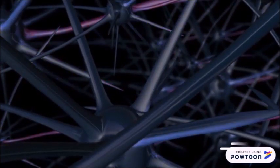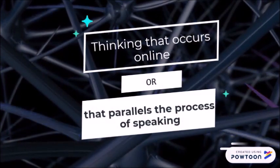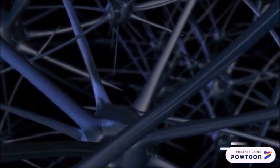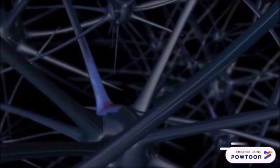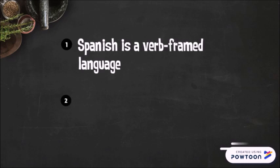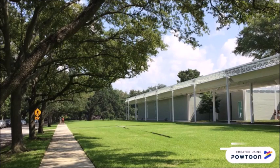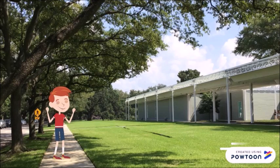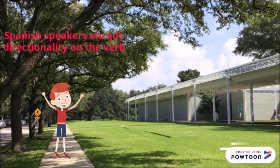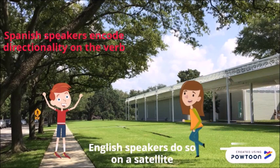To begin with, Thinking for Speaking refers to the thinking that occurs online or that parallels the process of speaking. When acquiring our L1, we learn a particular way of thinking for speaking. We need to say that Spanish is a verb-framed language and English a satellite-framed one. It means that while Spanish speakers encode directionality on the verb, English speakers do so on a satellite, which might be either an adverb or a preposition.